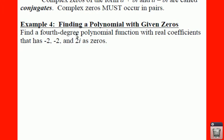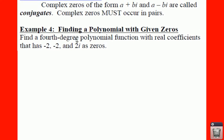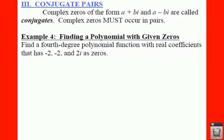So in this case, we have to use 2i and negative 2i as zeros. Because if you have a complex zero, these must occur in pairs. We talked about this before.